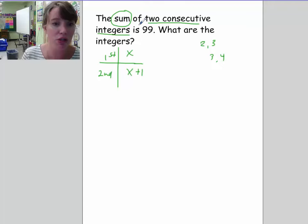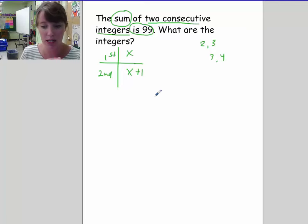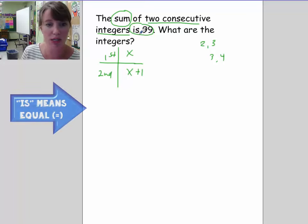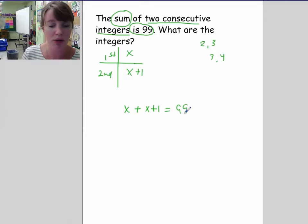Now the sum of these two integers is 99. So here we have our operation and our equal to sign. Is is always the equal sign, right? That in English language, the is is always equal. So the sum of x and x plus 1 is equal to 99. All right? So now we have an equation and now we're going to solve the equation.